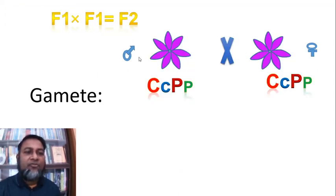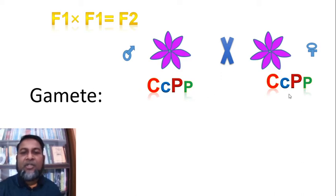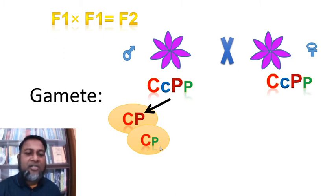When we cross F1 with F1, we find F2. The male flower is hybrid with genotype Cc Pp, and the female flower is also hybrid with genotype Cc Pp. During gamete formation, four types of male gametes are produced: capital C capital P, capital C small p, small c capital P, and small c small p.